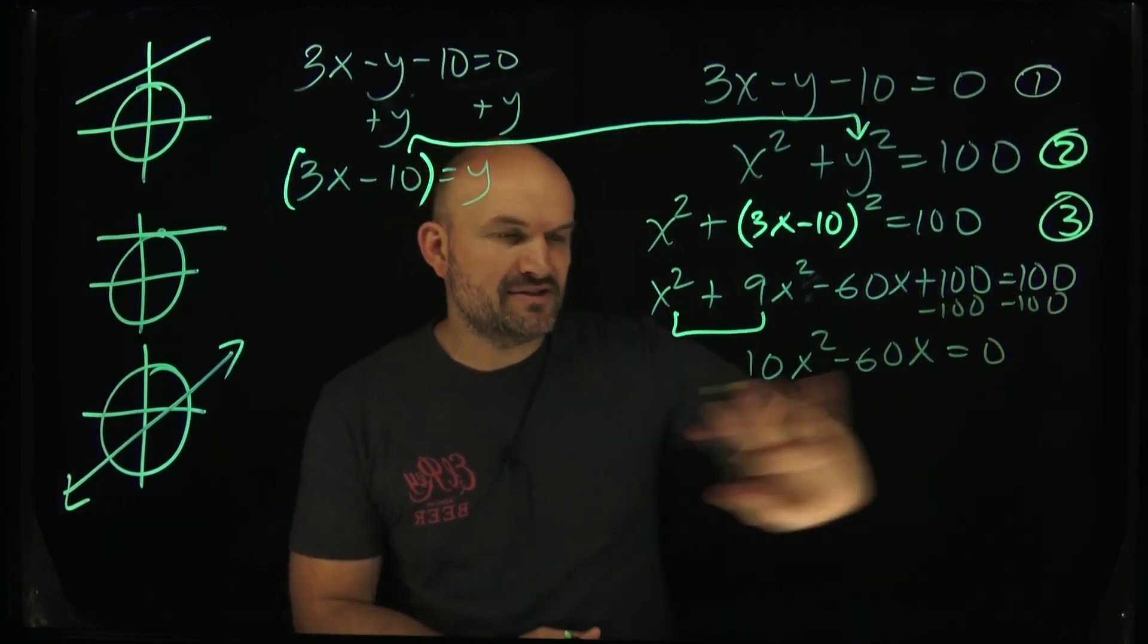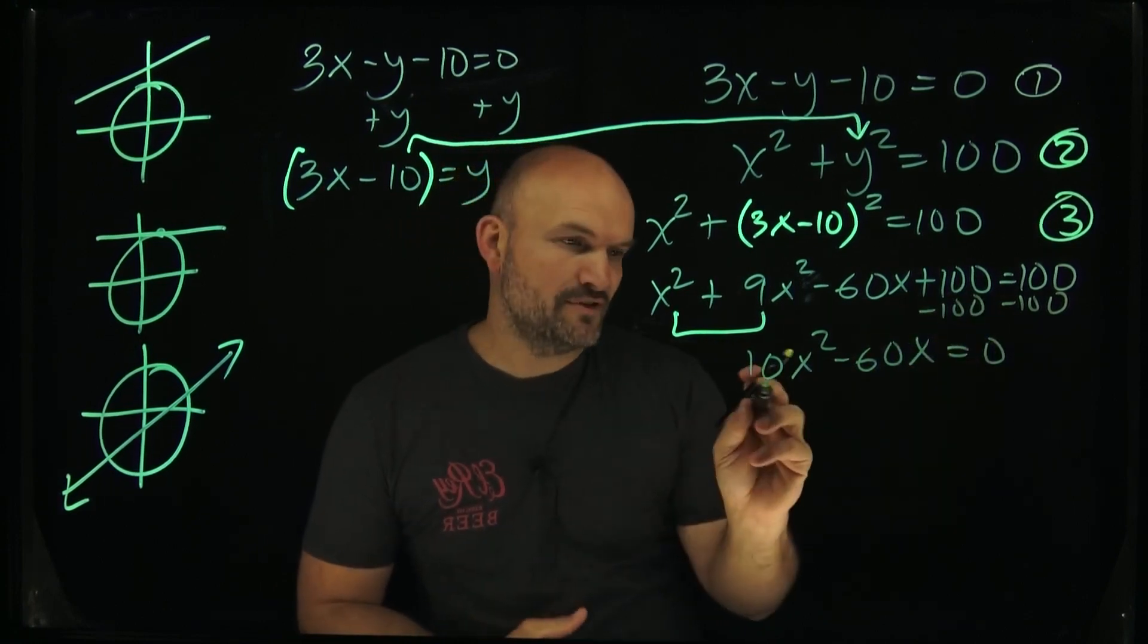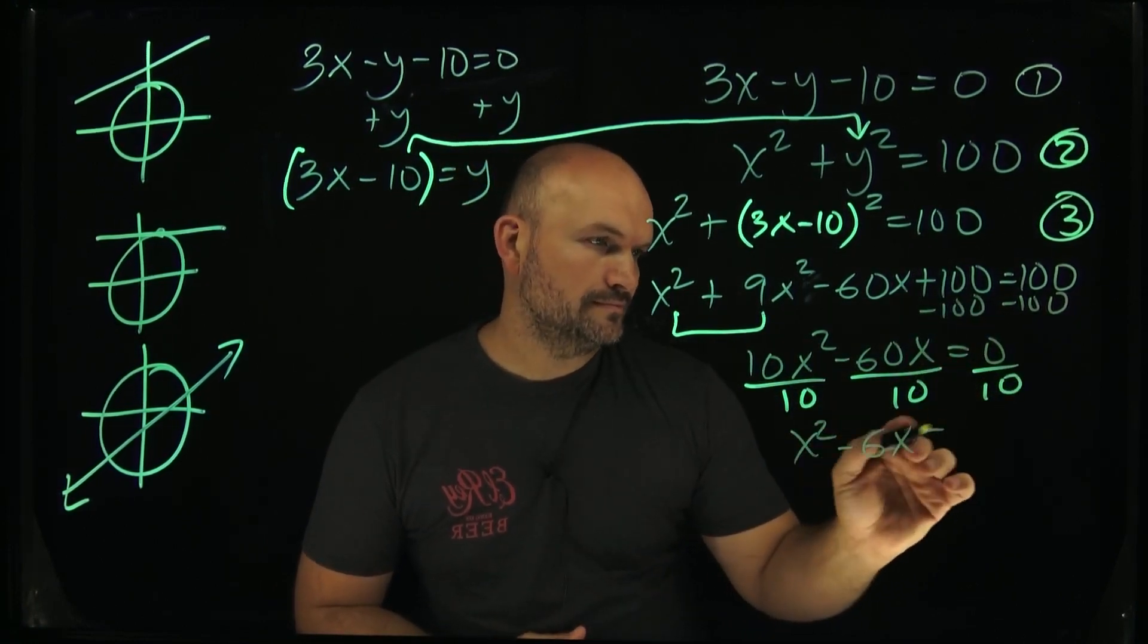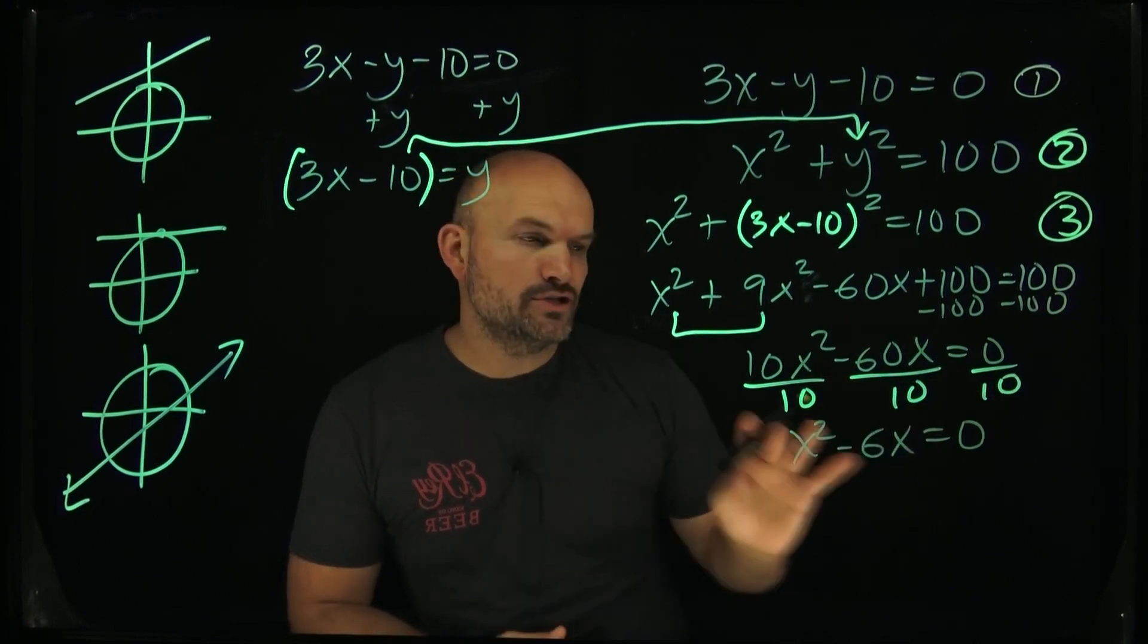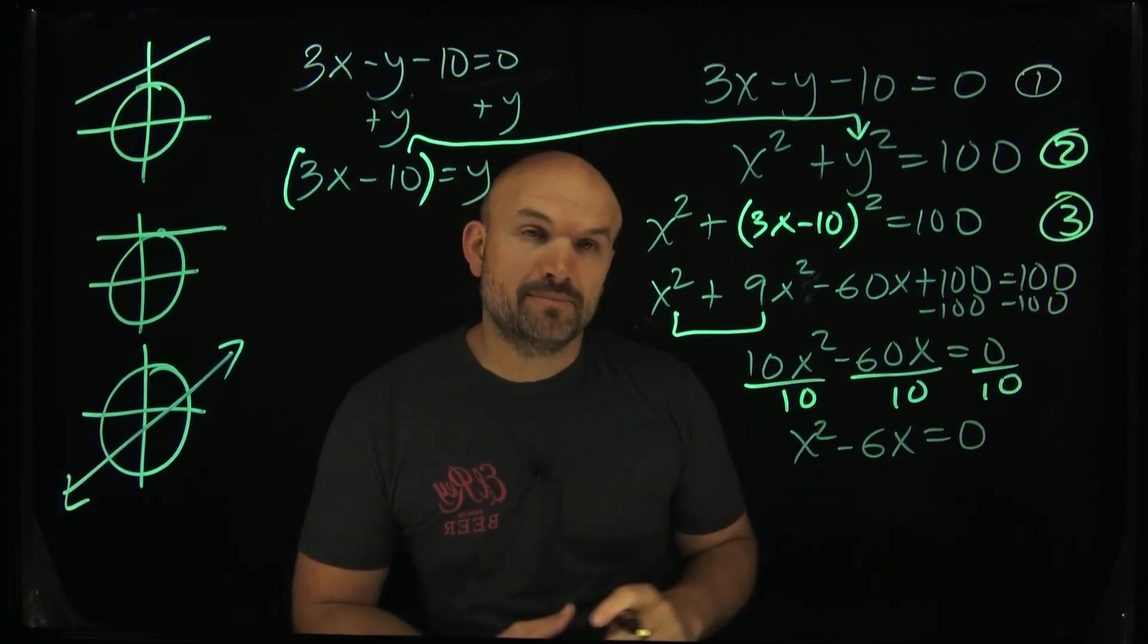Now I can divide everything by 10 to even simplify this further. And now I can just go ahead and factor out the 6 to create a product that I can use the zero product property to simplify.